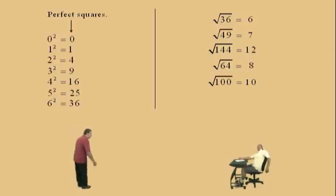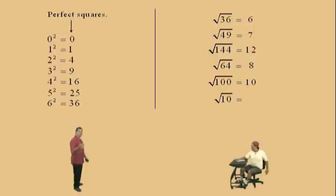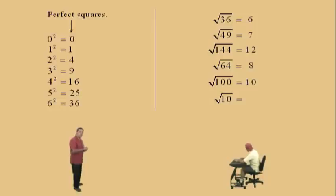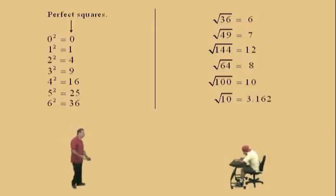Now pay attention to this one, Charlie. Don't get scared. What's the square root of 10? That's right — 10 is not a perfect square. Therefore, we have to use a calculator. The square root of 9 is 3, so the square root of 10 should be a little bit more than 3. If you take your calculator out and calculate the square root of 10, you will get 3.162, which is a little bit bigger than 3. In this class, at this time, we're only going to deal with square roots of perfect squares.